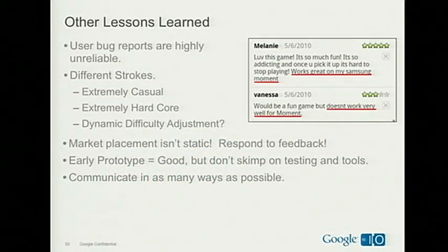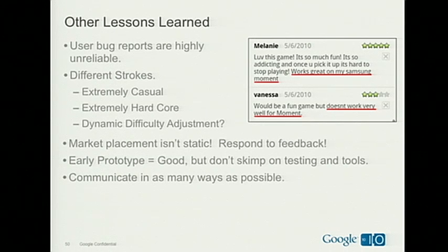Some lessons from users: user bug reports are highly unreliable. That said, if you can find a user willing to work with you, send logs, and say 'here's how I'm reproducing this bug,' those people are invaluable and you should definitely have an email correspondence with them. I also found that users tend to chalk up bugs — even when they're not bugs — to whichever device they're using. Almost all the time, the bugs I shipped affected all devices, and I have very few device-specific bugs. As an example, one person says 'works great on the Samsung Moment,' the next says 'doesn't work on Samsung Moment.' It turns out it works pretty good on the Moment.